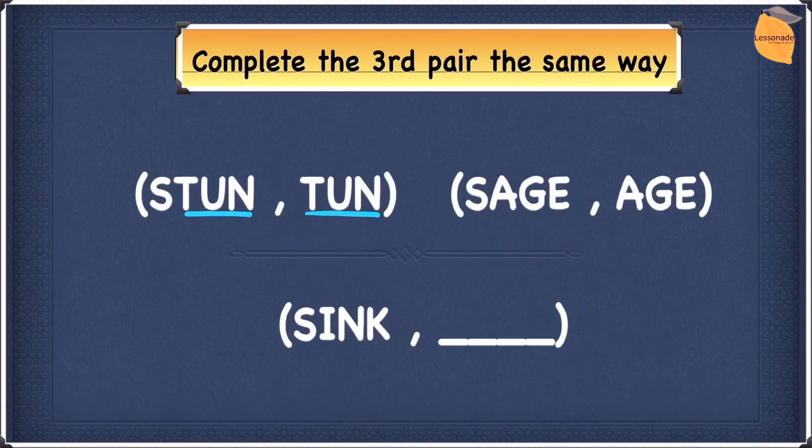So let's see if this rule applies for the second pair of words. The second pair of words is SAGE and AGE. So do they have the last three letters? And they do have the last three letters. And is the first letter removed? Yes, the first letter is removed.